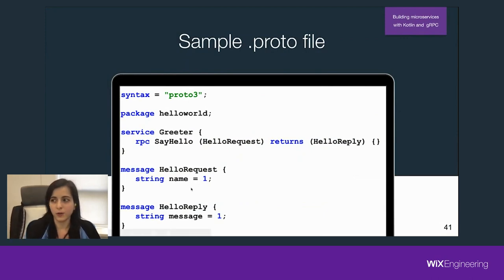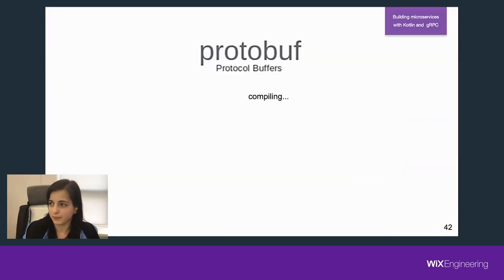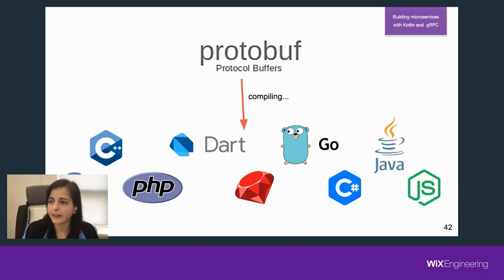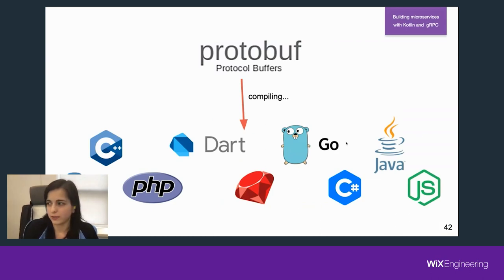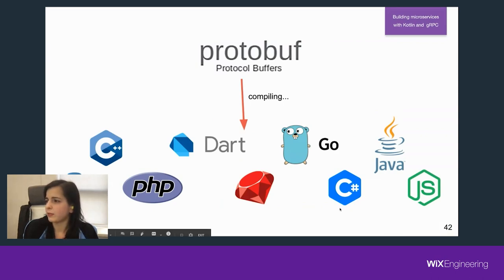When you write this proto file, the magic happens. You compile this file using some protobuf plugins for your language, and they compile to actually classes, interfaces, and other structures in the language you're using. For example, if you use the Java plugin, it will be compiled to Java; if you're using the Go plugin, it will be Go — and so on. There are some common popular languages, but more keep appearing.